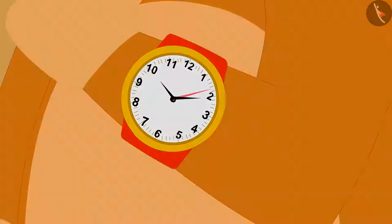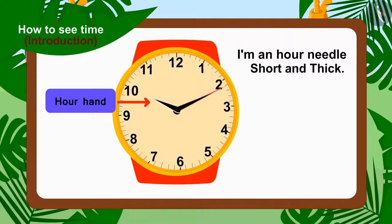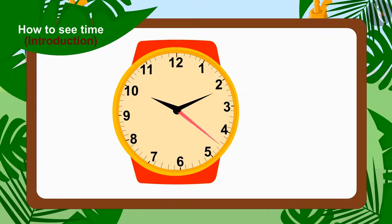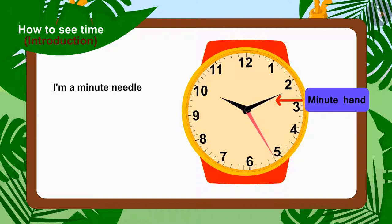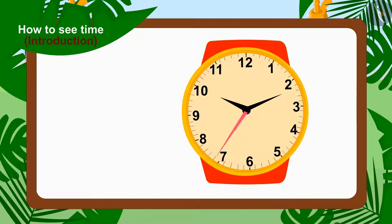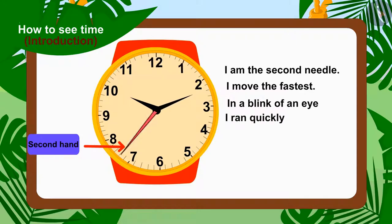Children, do you remember the needles of the clock? Let's revise them once again through a poem. I am a one-hour needle, short and thick. Whenever the hour is over, I move forward. I am a minute needle, big and long. As soon as the minute is over, I run ahead. I am the second needle. I move the fastest. In a blink of an eye, I run quickly ahead.